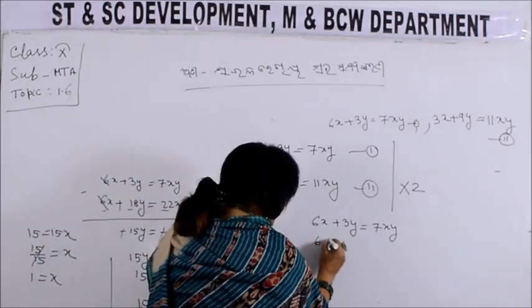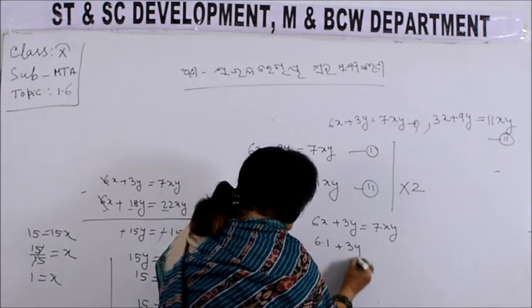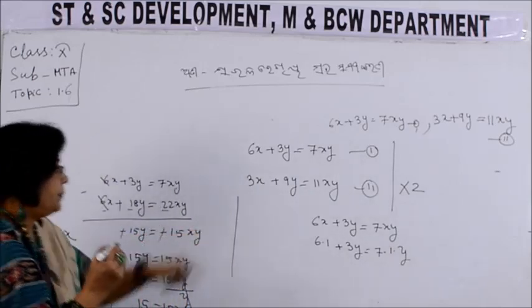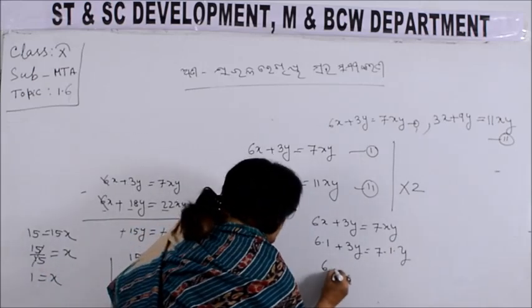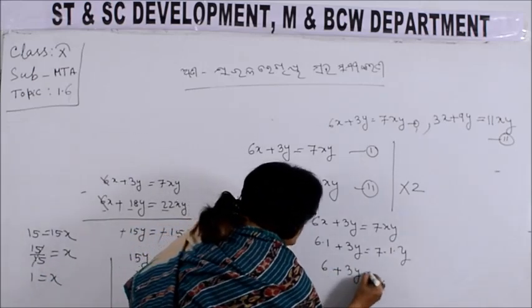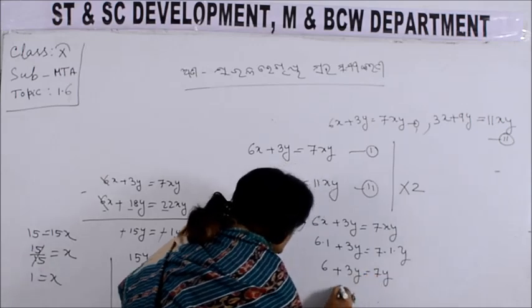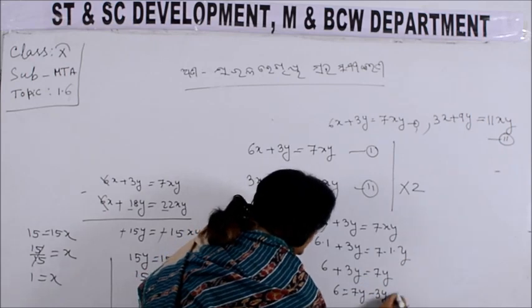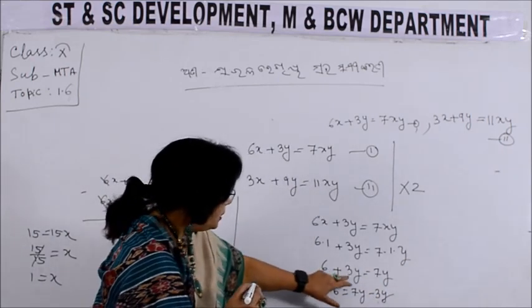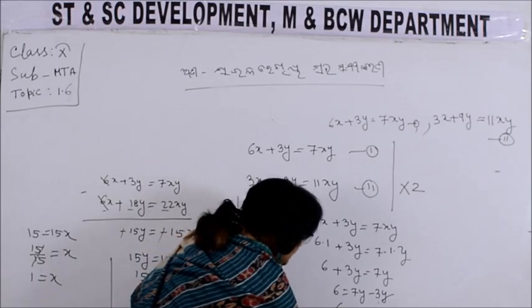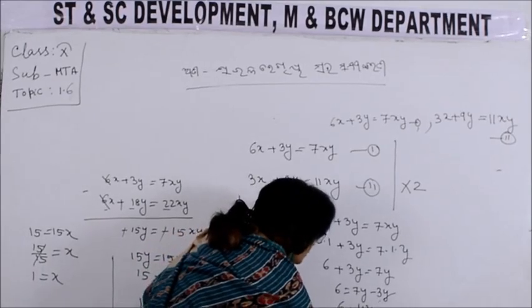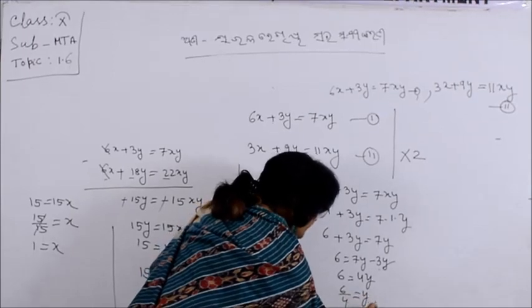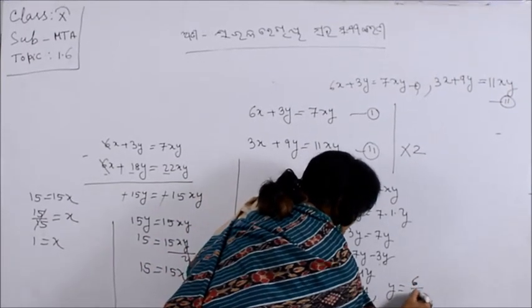6 into x=1 plus 3y, 7 into x=1 into y. I will be able to get x equal to 1. 6 to 4, 3y is equal to 7y. 6 to 7y is equal to minus 3y. So 6 is equal to 4y. 6 by 4 is equal to y. So y is equal to 6 by 4.